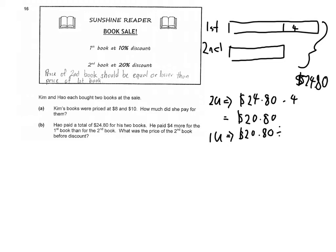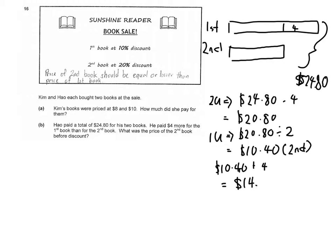One unit divided by two equals $10.40, so $10.40 is the price of the second book. For the first book, it will be $10.40 plus $4, which equals $14.40.